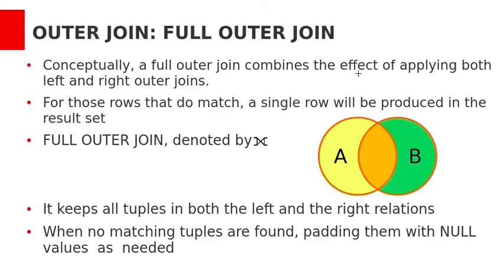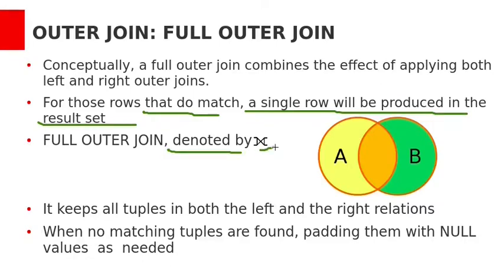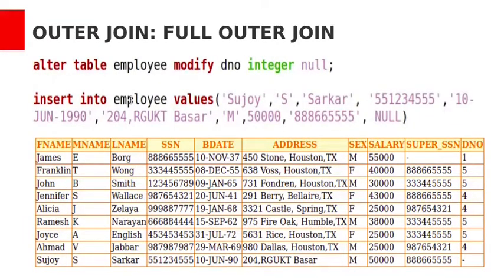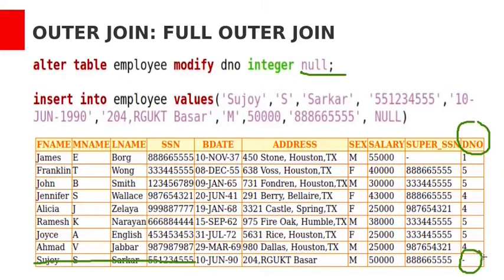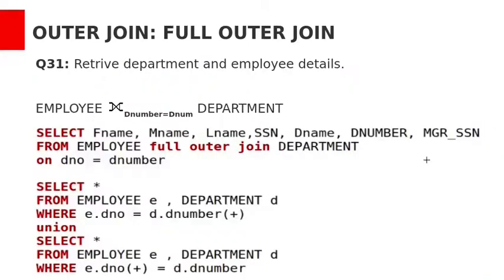Let's see full outer join. Full outer join combines the effect of applying both left and right outer joins. For rows that do match, a single row is produced in the result set. Full outer join is denoted by this symbol in relational algebra. It keeps all tuples in both left and right relations, adding null values when no matching tuples are found. The employee table is modified to allow null values in the dnum column: ALTER TABLE employee MODIFY dnum INTEGER NULL. A new employee row is then inserted with a null dnum, meaning this employee is not assigned to any department.